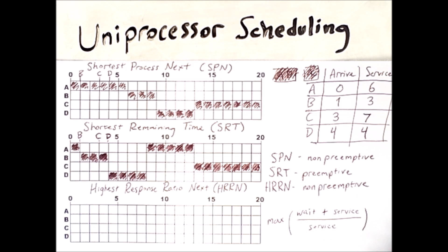So wait time is the amount of time that the process has been in the system without running. So it's the current time minus the arrival time. And service time is simply the value shown in the column there.